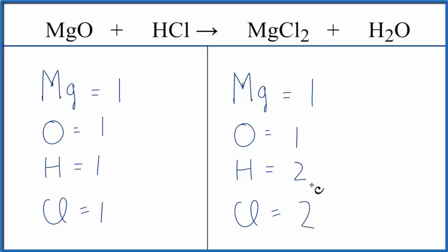This is a fairly straightforward equation to balance. We have one hydrogen here and two here, one chlorine here and two here. So if we could double these, the equation would be balanced.